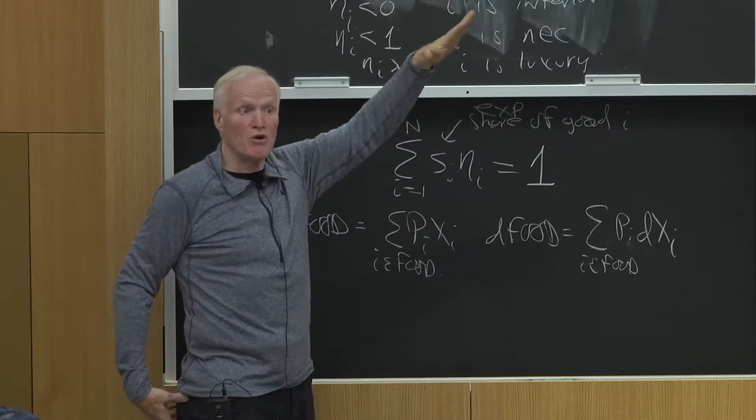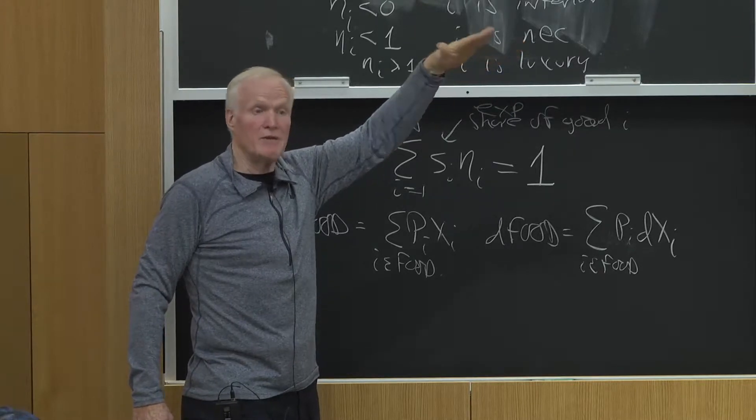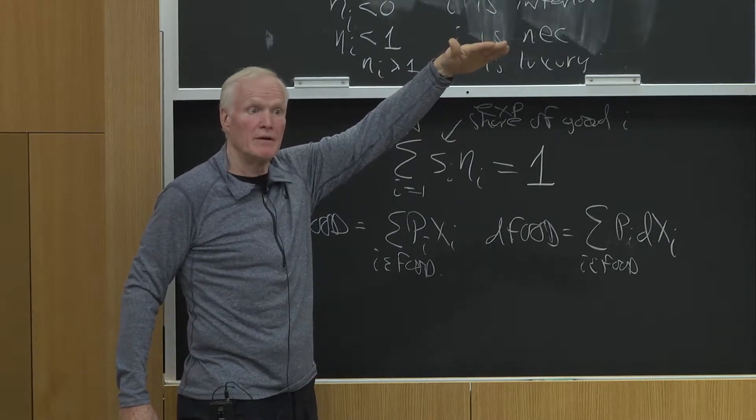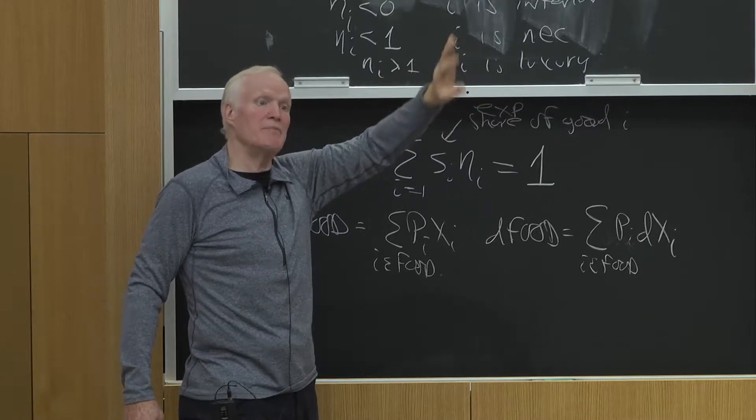So food would be a normal good, but a normal necessity. That is, typically we think of food expenditures rising less than proportionately with income. So food would be a normal good, but it would be a necessity.